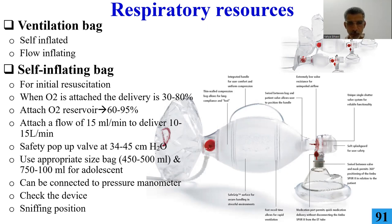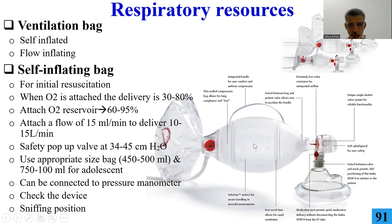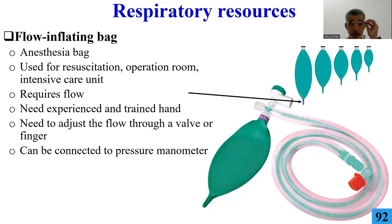When using the Ambu bag, use the safety pop-off valve — it opens if pressure exceeds 45 cmH2O, because we tend to over-inflate when babies are in distress. Use the appropriate bag size: 250, 500, or 750 ml — don't use more than 500 ml size. Connect the pressure gauge. Put the baby in the sniffing position, meaning the tip of the nose and the tip of the chin are at the same level.